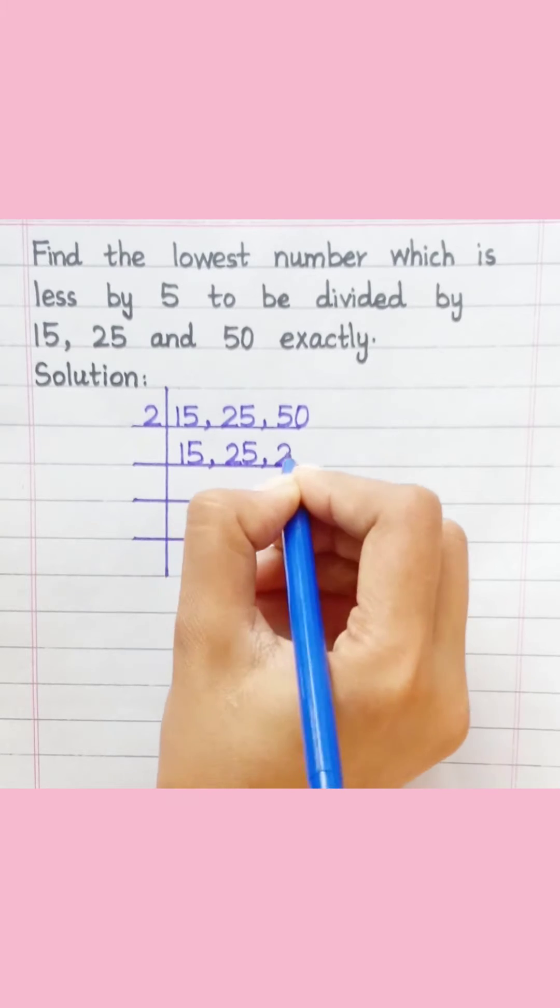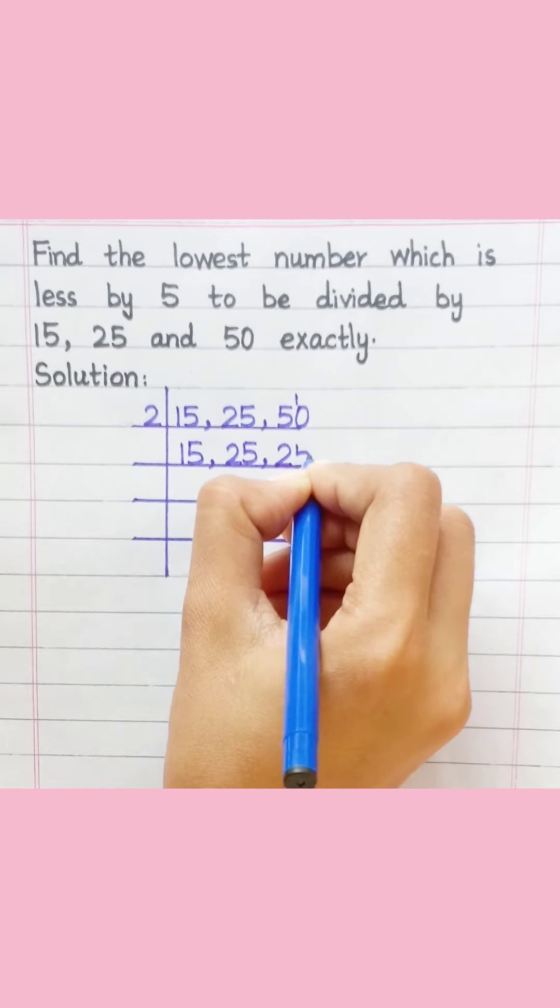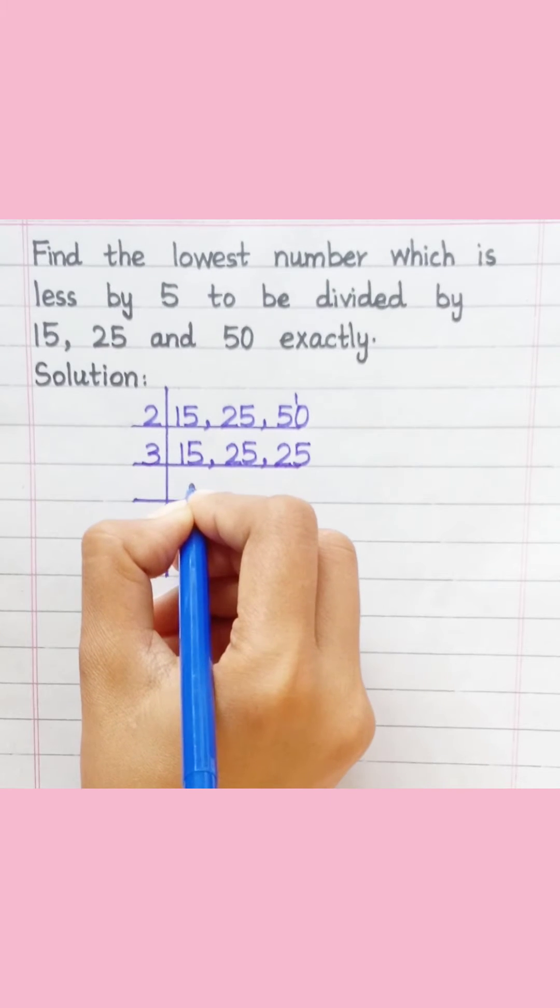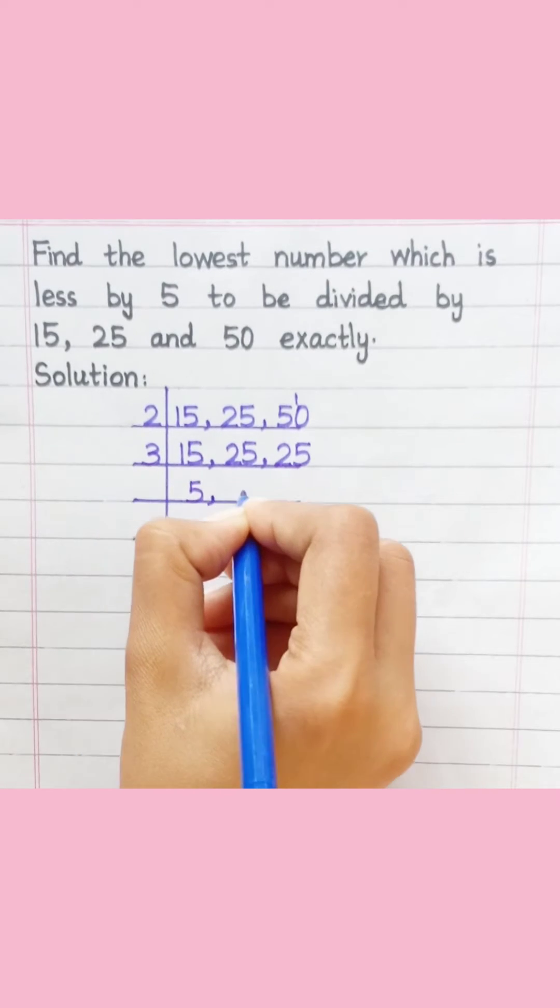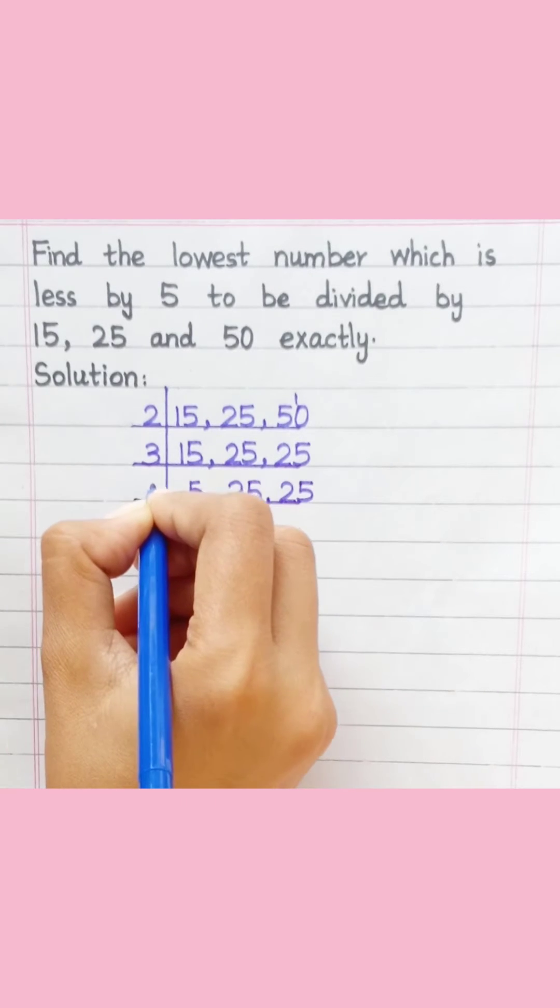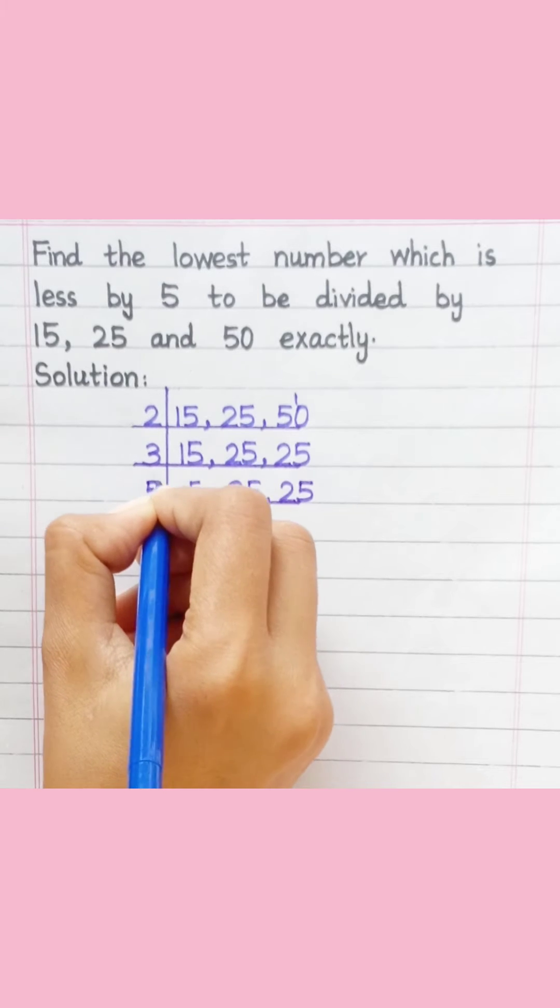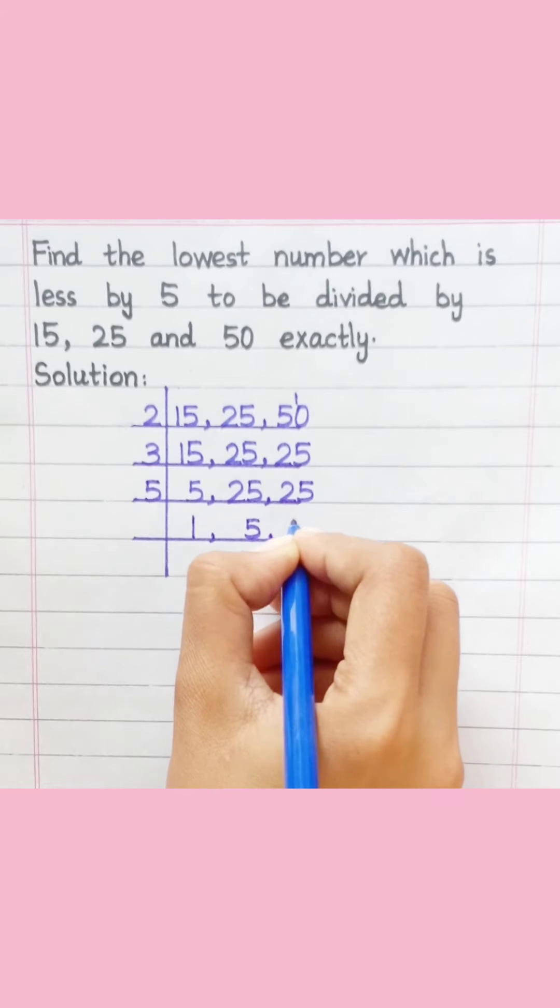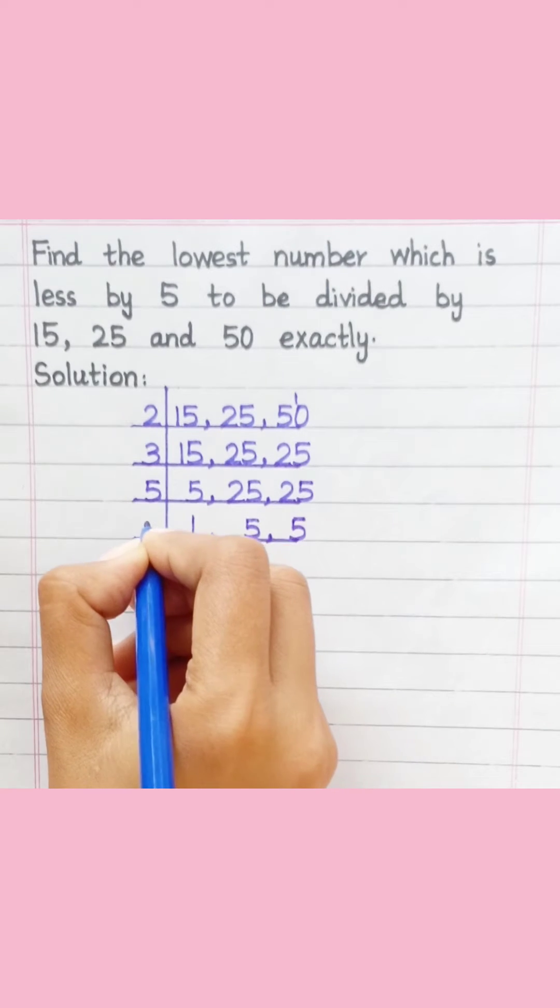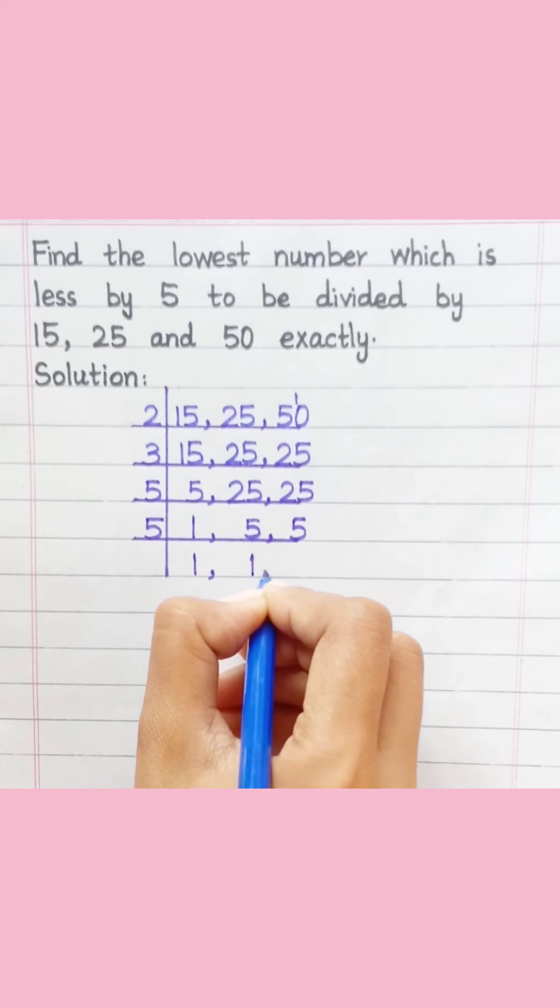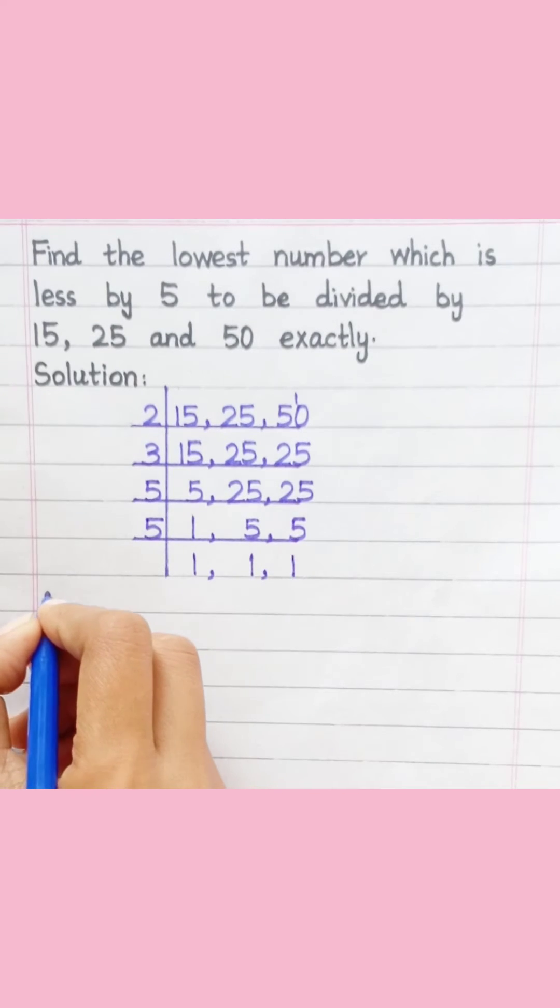Performing prime factorization: 2 times 2 equals 4, 2 times 5 equals 10, 3 times 5 equals 15, 5 times 1 equals 5, 5 times 5 equals 25. Breaking down each number into prime factors.